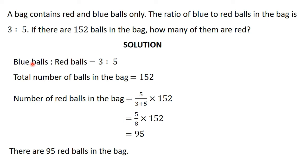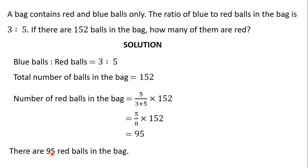The part of the ratio that belongs to blue balls is 3, the part that belongs to red balls is 5, and the total is 8. So, the number of red balls in the bag equals 5 out of 8 times 152, which gives us 95. So, we have 95 red balls in the bag.